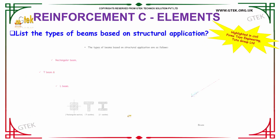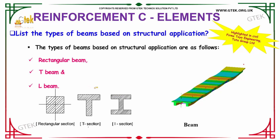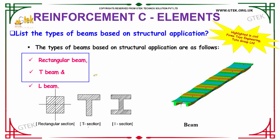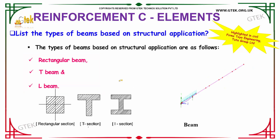Our next question is: list the types of beams based on structural application. The types of beams based on structural application are: Rectangular beam, T beam, and L beam. So these are the types of beams based on structural application.